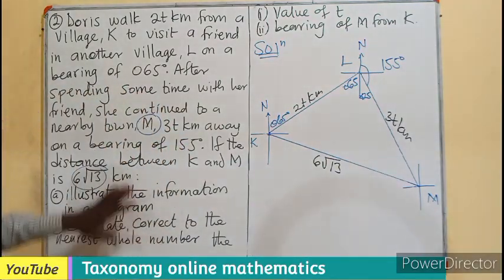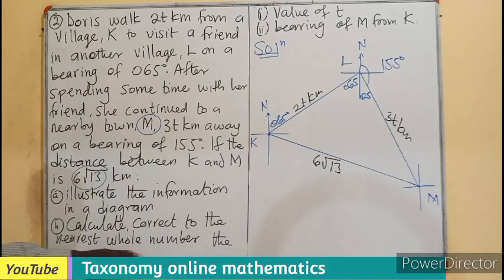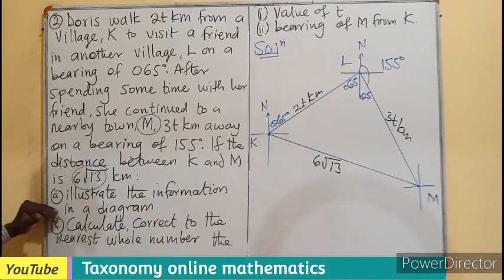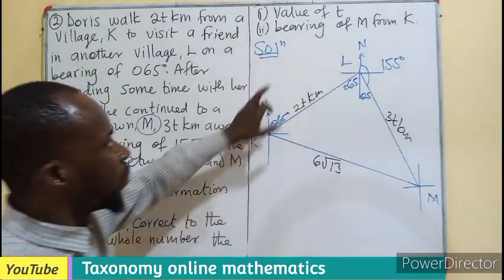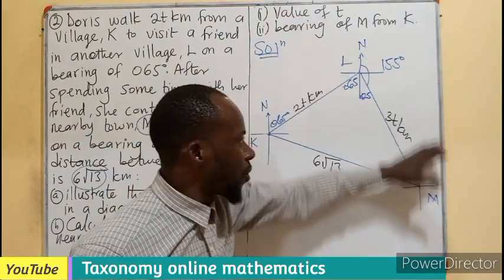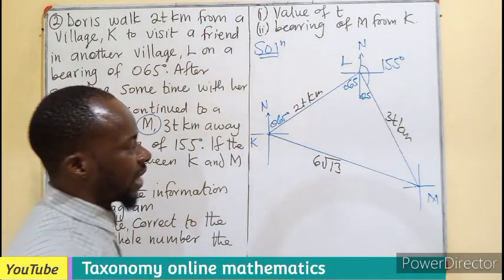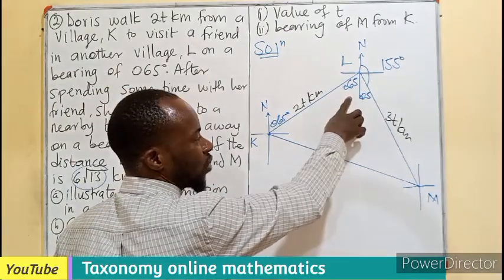So what do we do? With this other information we have, we have already represented this information on our diagram. We are now going to find a value of T from here. So since we are saying that this is a right-angled triangle, we can use a Pythagorean theorem.